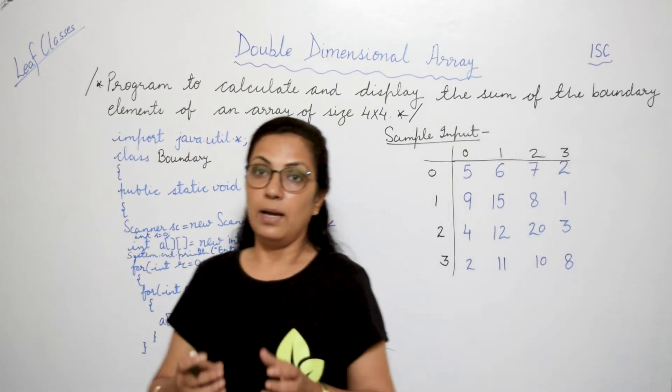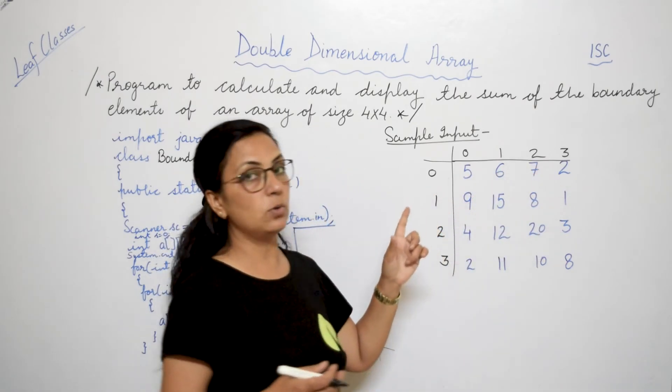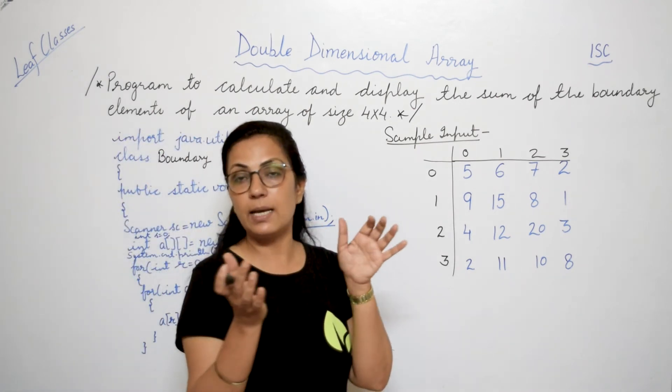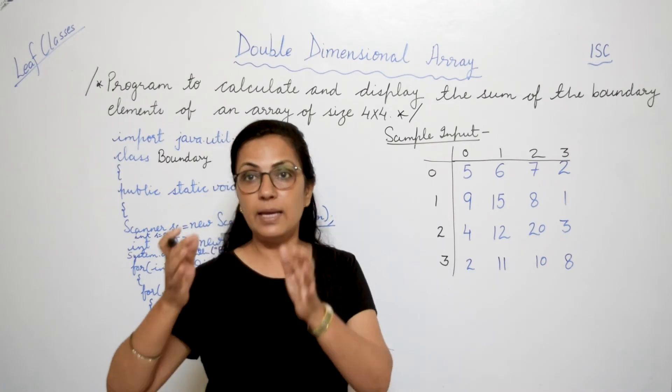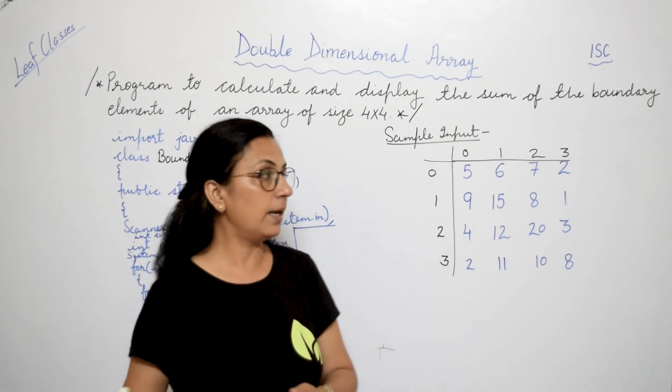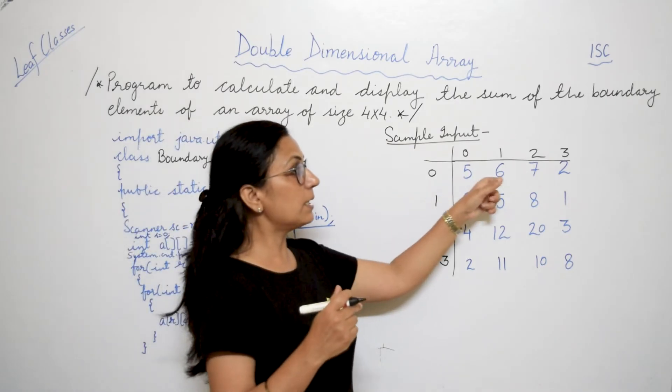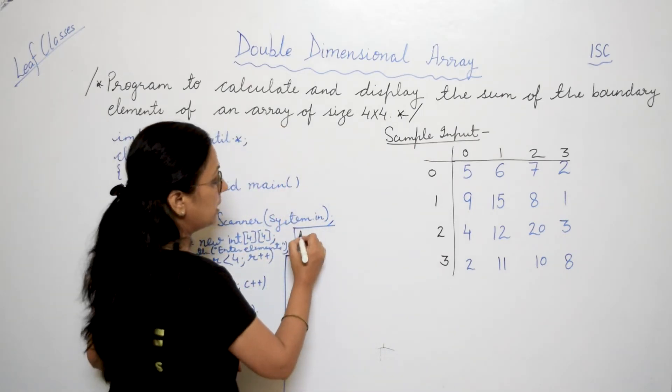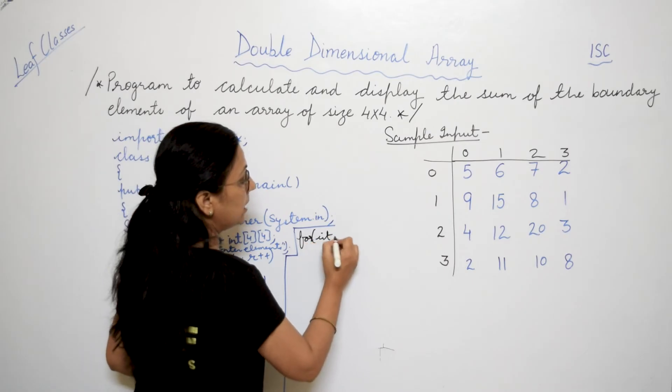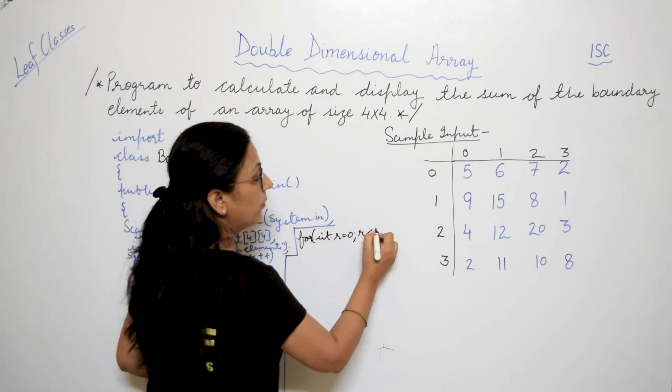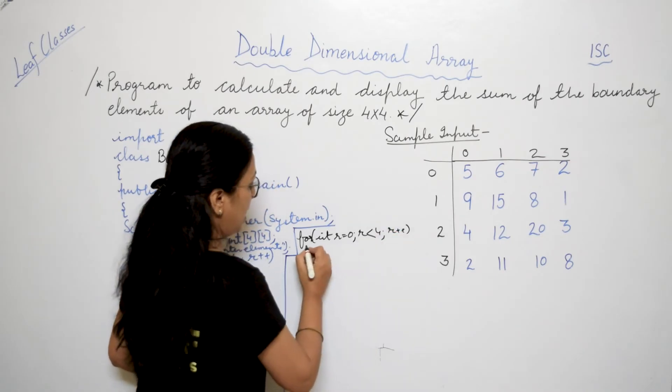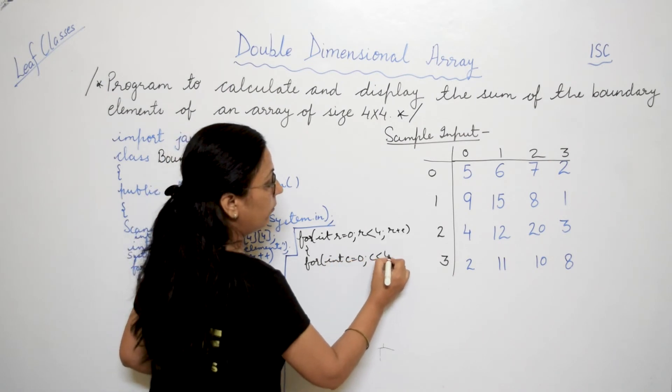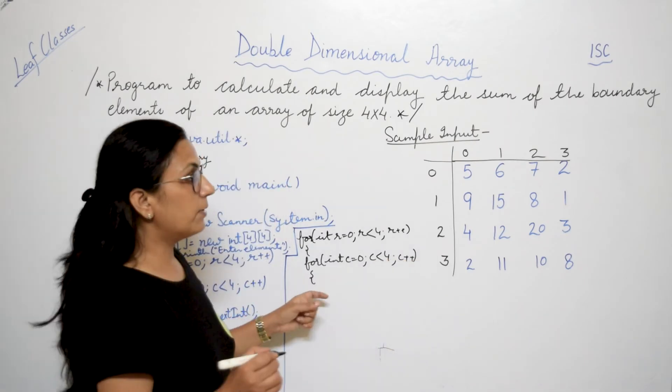Now we want to access the elements which are at the boundary. That portion we can do here within this also, but I will always recommend you to take a separate looping for input, then for processing, and finally the printing. So again, since we have to check each and every element whether it is there in the boundary or not, nested loop will be used. So we will take for this again, for int r equals to 0, r less than 4, r++, and nested loop also inside. We will take c equals to 0, c less than 4, c++. I have already told you the logic.